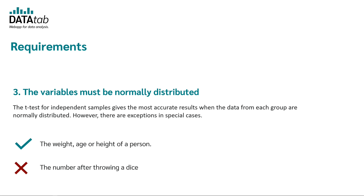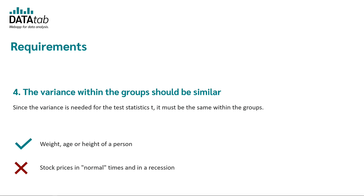The third requirement is that the variable must be normally distributed. The t-test for independent samples gives the most accurate results when the data from each group are normally distributed — for example, weight, age, or height. It is not fulfilled, for example, for the number after throwing a dice. The fourth requirement is that the variance within the groups should be similar. Since variance is needed for the test statistic t, it must be roughly equal within the groups — for example, weight, age, or height. Not valid would be the stock price in normal times versus in a recession.